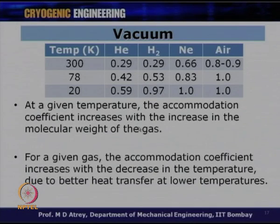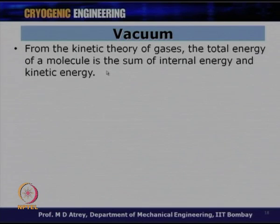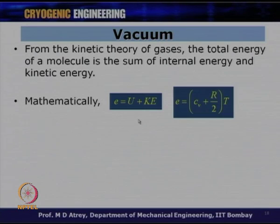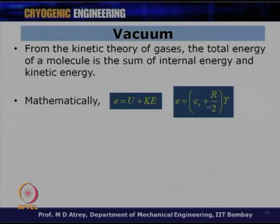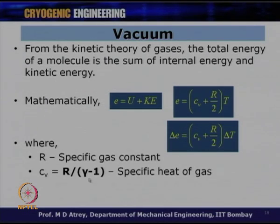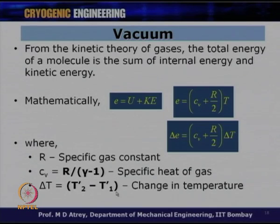From the kinetic theory of gases, the total energy of a molecule is the sum of internal energy and kinetic energy: E = U + KE. Since U = Cv·T and kinetic energy = (1/2)RT, we write E = (Cv + R/2)·T. Therefore, delta E = (Cv + R/2) × delta T, where R is the specific gas constant, Cv = R/(γ−1), and delta T is the actual temperature change T2 dash minus T1 dash.